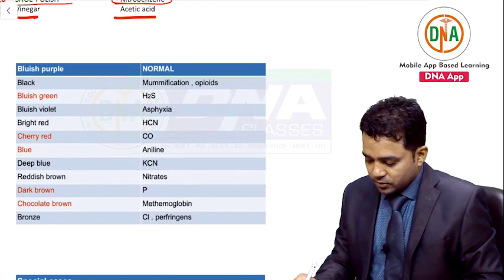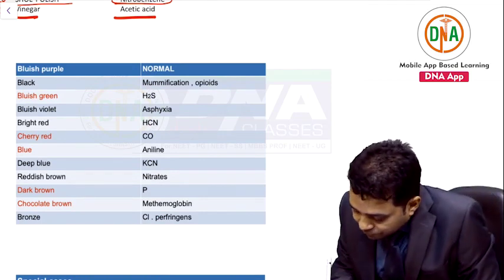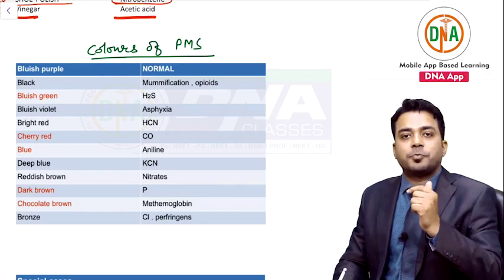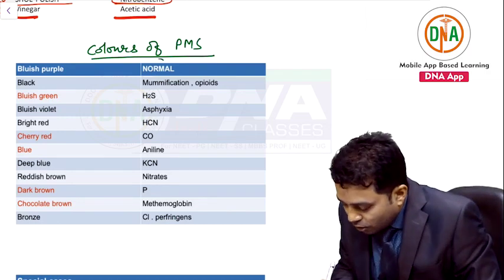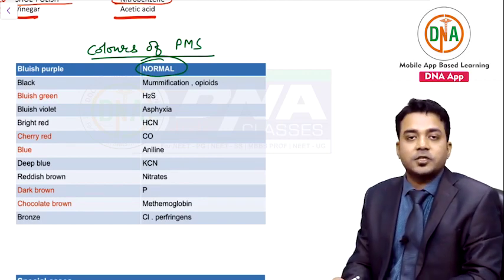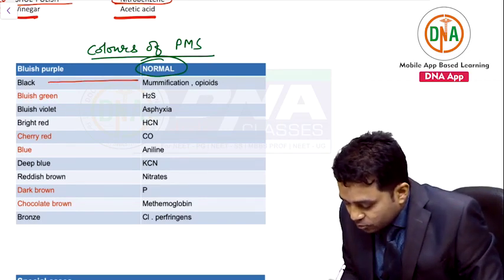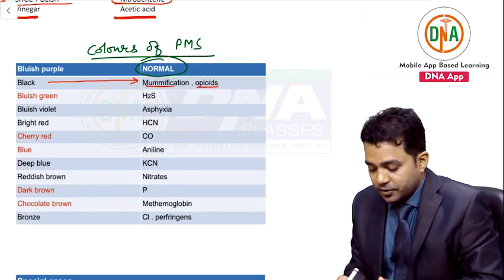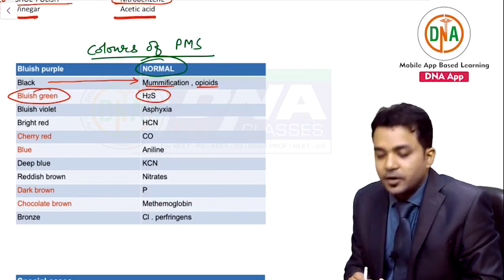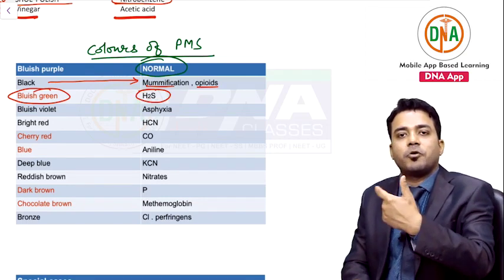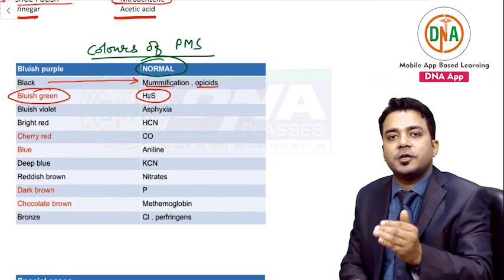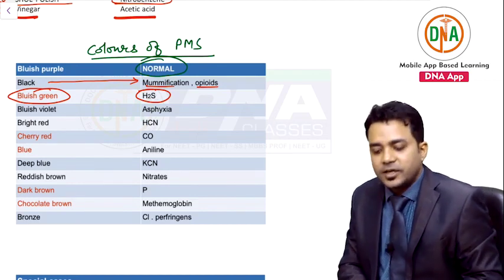Next table: different colors of postmortem staining (PMS). Bluish purple is the normal color of PMS. Black color is due to mummification and opioid poisoning. Bluish green PMS is due to hydrogen sulfide — associated with the Japanese detergent suicide technique. Bluish violet PMS is due to asphyxia — asphyxial deaths have bluish violet PMS.